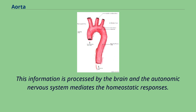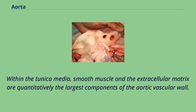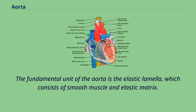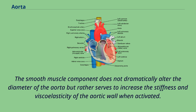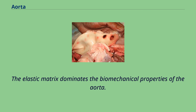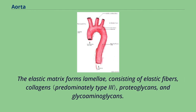Within the tunica media, smooth muscle and the extracellular matrix are quantitatively the largest components of the aortic vascular wall. The fundamental unit of the aorta is the elastic lamella, which consists of smooth muscle and elastic matrix. The medial layer of the aorta consists of concentric musculo-elastic layers in mammals. The smooth muscle component does not dramatically alter the diameter of the aorta but rather serves to increase the stiffness and viscoelasticity of the aortic wall when activated. The elastic matrix dominates the biomechanical properties of the aorta and forms lamellae consisting of elastic fibers, collagens, proteoglycans, and glycosaminoglycans.